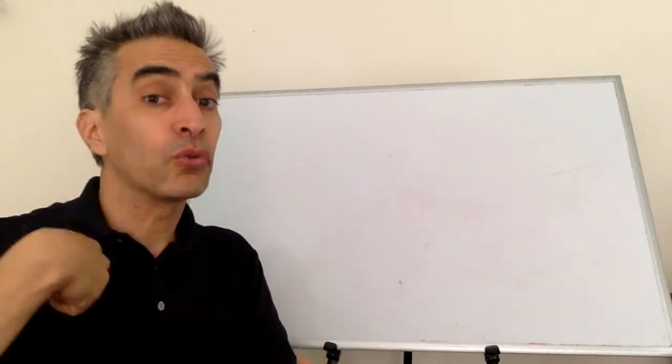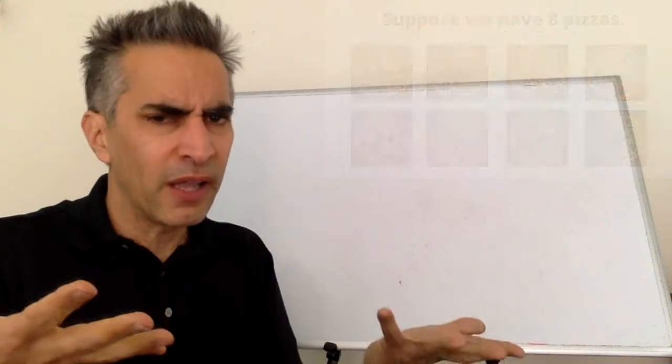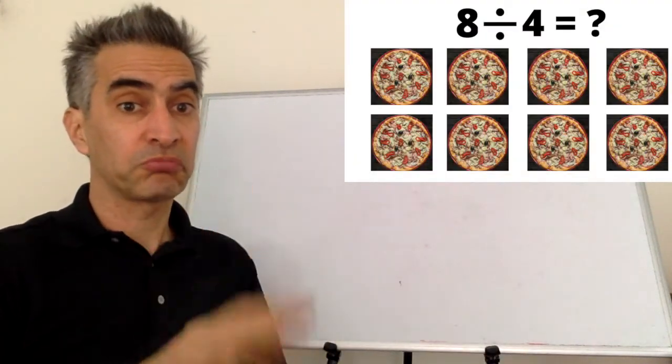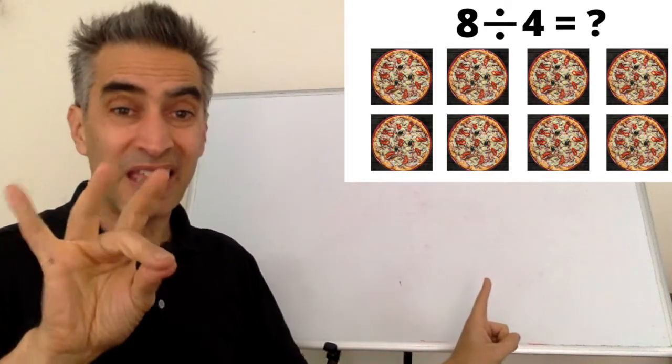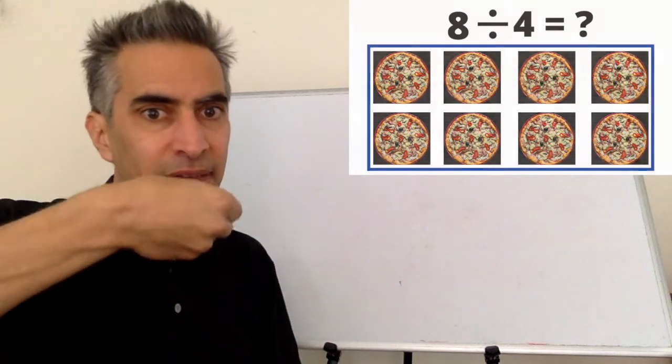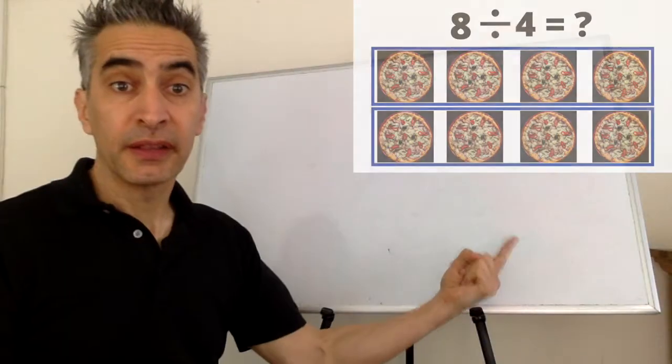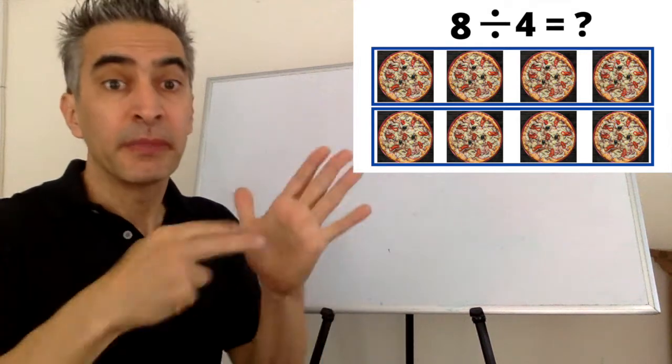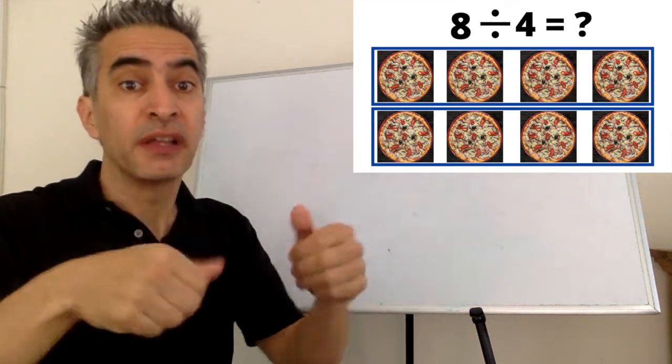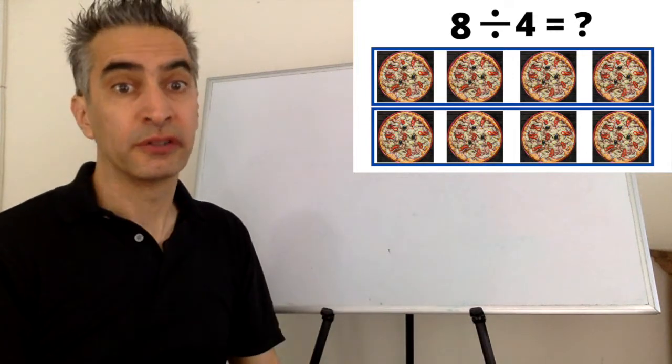Next, suppose we have eight pizzas. Our division problem is eight divided by four. This eight means eight whole pizzas. This divided by four means take these eight pizzas, separate them into groups, and each group must have four pizzas.